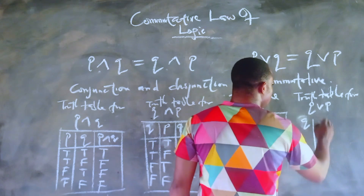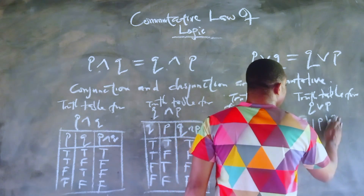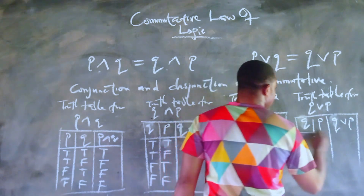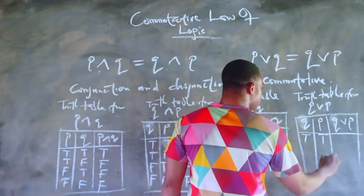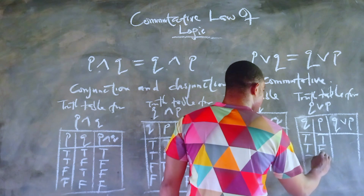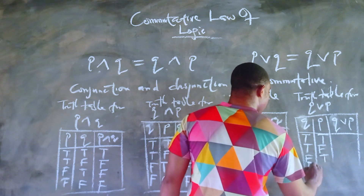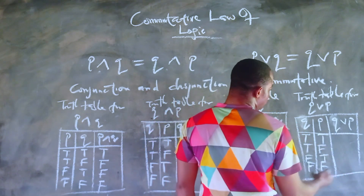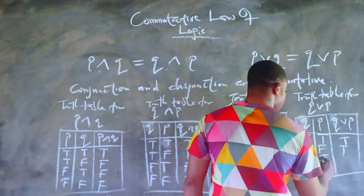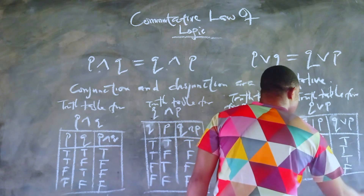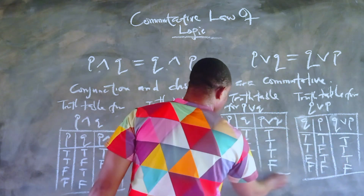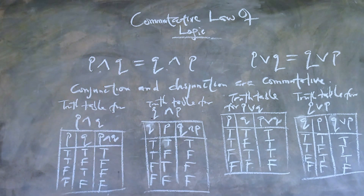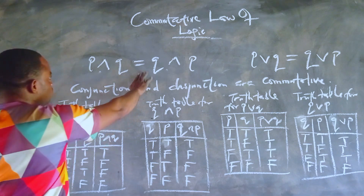This is the commutative law of logic. If you get value from this lesson, remember to hit the like button and subscribe. For Q or P, the four possible conditions are: true/true, true/false, false/true, and false/false, since we have only two simple statements in the compound statement. For an OR statement, as long as one of the statements is true, the truth value for the compound statement will be true — and only the last one happens to be false. Comparing the two tables, you will notice that both tables appear identical, and this is the commutative law of logic.